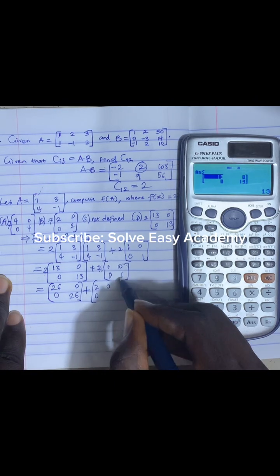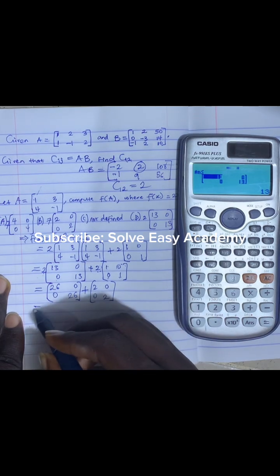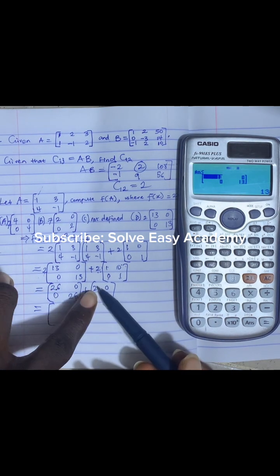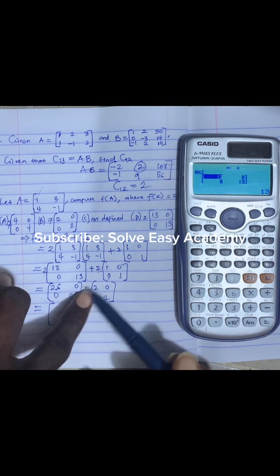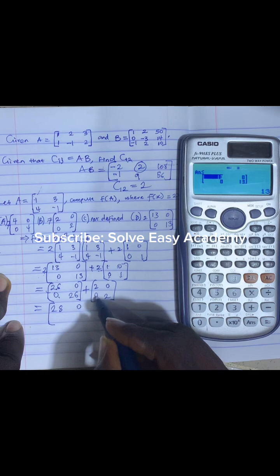Adding them together gives us a result which is - we add them by the position. This position plus this position, so 26 plus 2 is 28, 0 plus 0 is 0, 0 plus 0 is 0, 26 plus 2 is 28.